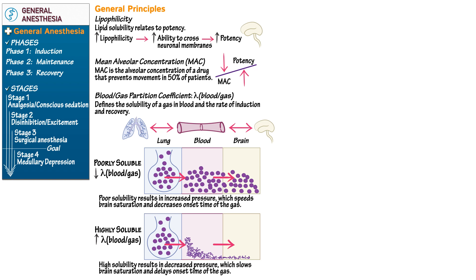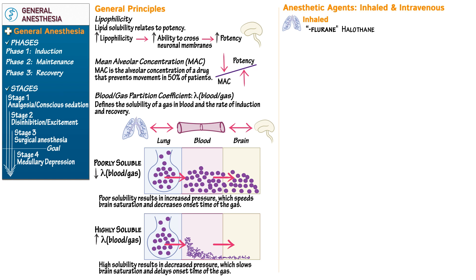There are two types of general anesthetic agents: inhaled, also known as volatile, and intravenous. Inhaled anesthetics enter the body and form an equilibrium between the alveoli, blood, and tissues. Unlike other drugs, they are absorbed and eliminated through the same organ — the lungs. Inhaled agents can be recognized in part by how they end in '-flurane,' except for halothane and nitrous oxide.